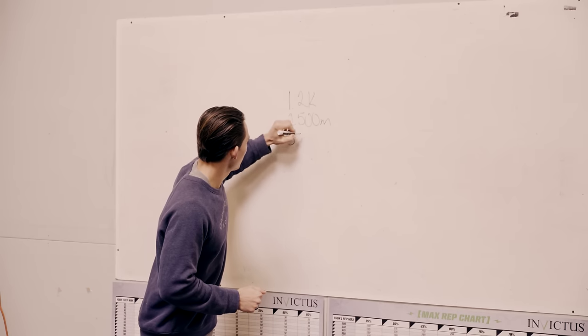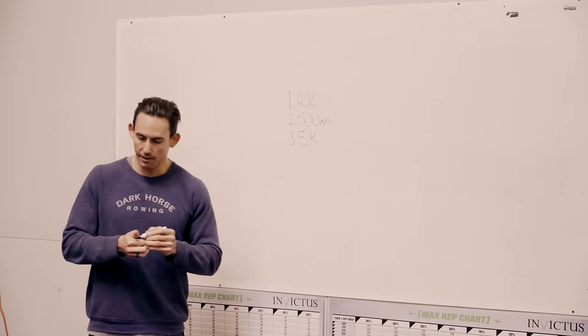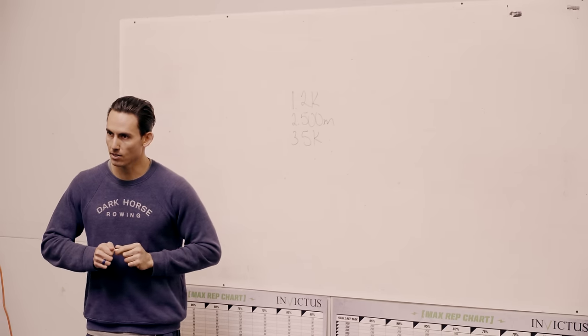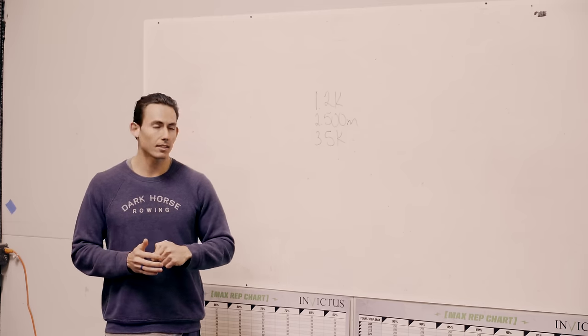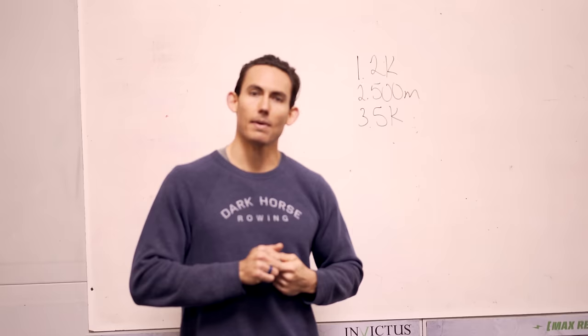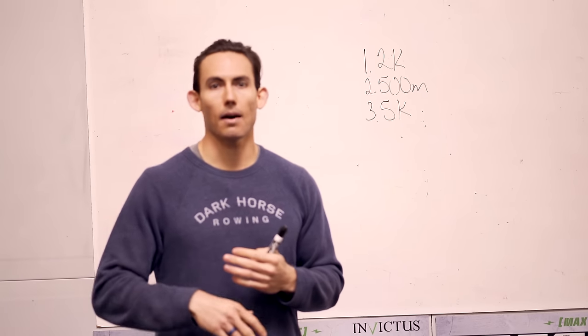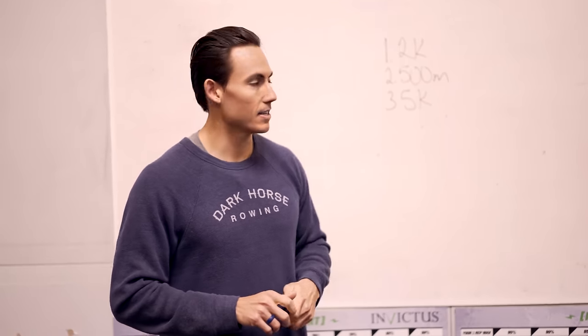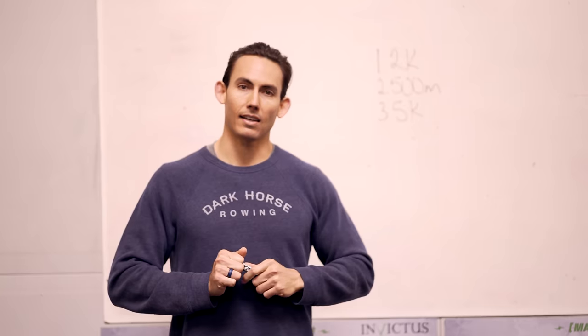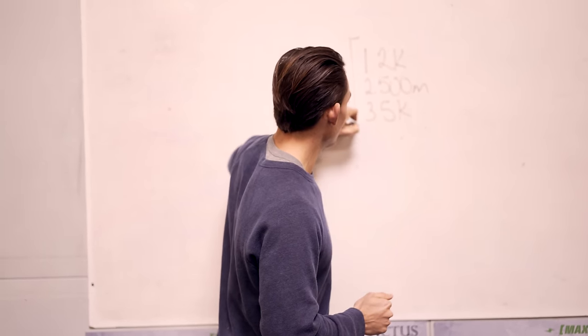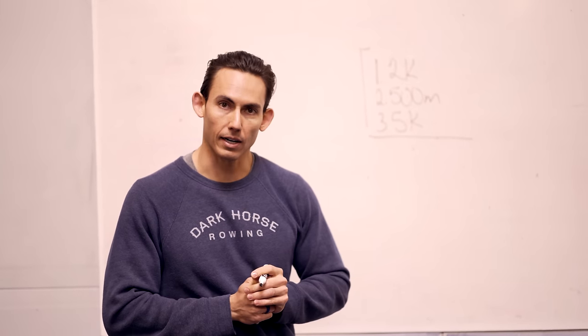Number three is the 5K or 5,000 meters. Now this is your endurance test. This is also a bit of a bear. It may take you anywhere from 17 up into the 30 minute range. This is one of those where you just have to settle in and get comfortable being uncomfortable. These are your starter three most important workouts.